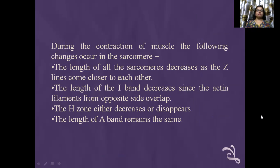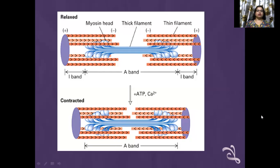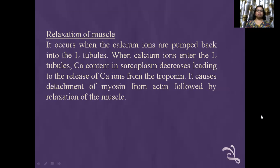During contraction of the muscle, the following changes occur in the sarcomere: the length of all sarcomeres decreases as the Z lines come closer to each other; the length of the I-band decreases since actin filaments from opposite sides overlap; the H-zone either decreases or disappears; and the length of the A-band remains the same. Relaxation of muscle occurs when calcium ions are pumped back into the L-tubules. When calcium ions re-enter the L-tubules, calcium concentration in the sarcoplasm decreases, leading to release of calcium ions from troponin. This causes detachment of myosin from actin, followed by relaxation of the muscle.